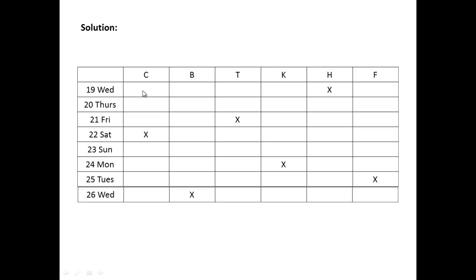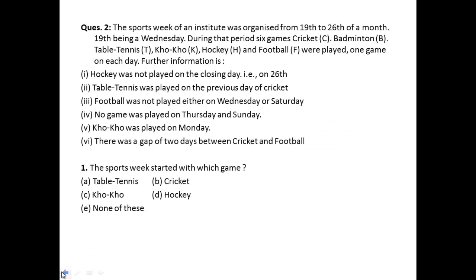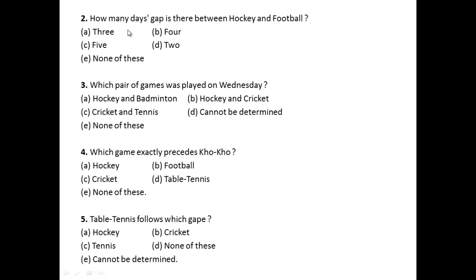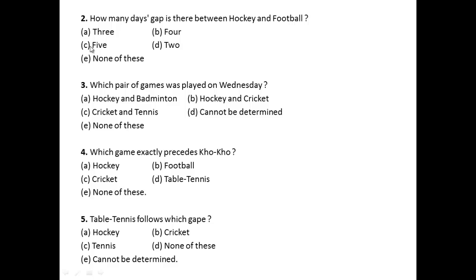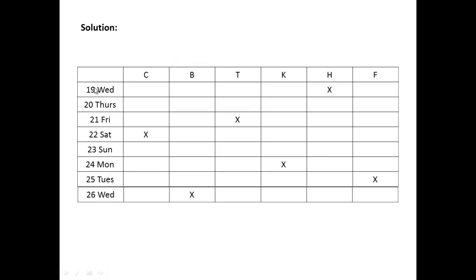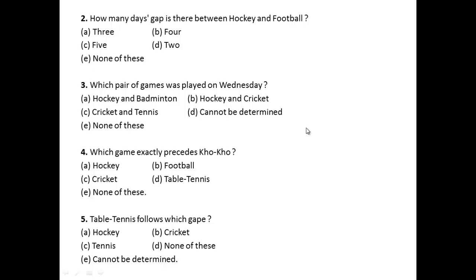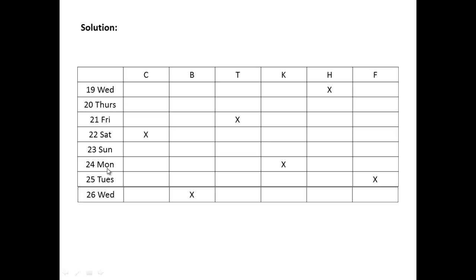Now we can answer every question from the table. The sports week started with which game? The sports week started with hockey, so the answer is hockey. How many days gap is there between hockey and football? Between hockey and football there is a gap of five days, so the answer is five days. Which pair of games was played on Wednesday? On Wednesday we had two games — one on the 19th and one on the 26th — so it is hockey and badminton, and the answer is A.